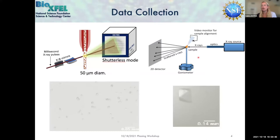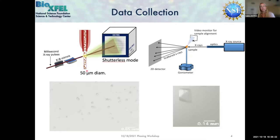The conventional setup uses a goniometer - a mount that can rotate the crystal through an X-ray beam - and we collect the scattered X-rays on a detector. We rotate the crystal to traverse reciprocal space and get a complete data set. A newer method developed over the last 10 years uses many tiny micro-crystals injected through the X-ray beam in random orientations, summing the intensities to get a complete data set - particularly useful if you have trouble growing large crystals.